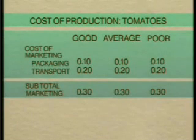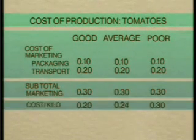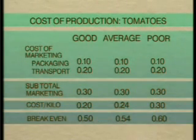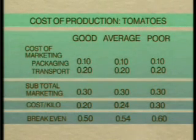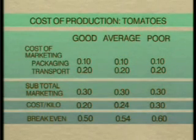These will help to tell growers what price they need to obtain to cover the cost of production. The cost of packaging the tomatoes and transporting them to the market needs to be added to the cost per kilo in order to build up to the break-even cost — the price farmers will need to receive to cover all their costs. As you can see in this example, packaging and transport are often the highest costs.